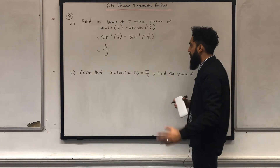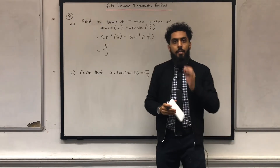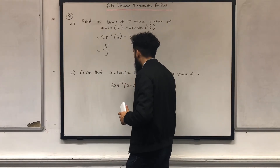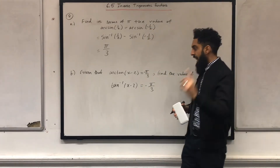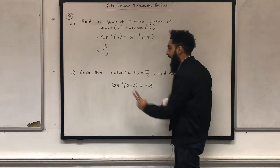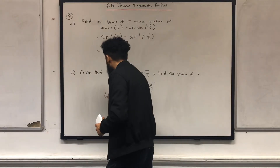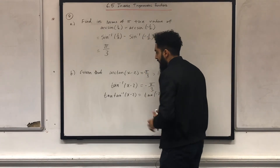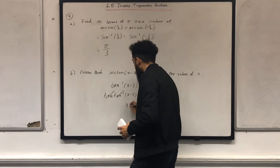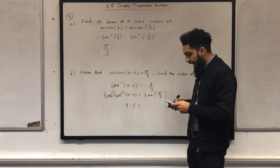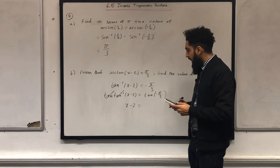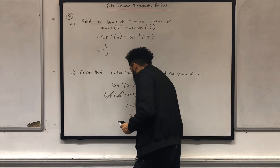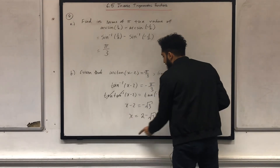Part B: given that arctan(x − 2) equals minus pi over 3, find the value of x. Rewrite as tan to the power minus 1 of (x − 2) equals minus pi over 3. The inverse of tan to the power minus 1 is just tan, so I apply tan on both sides. Tan and tan inverse cancel each other to give x minus 2 equals tan(−pi/3). Typing tan of minus pi over 3 into the calculator gives minus square root 3, so x equals 2 minus square root 3.